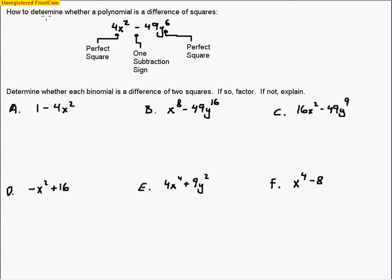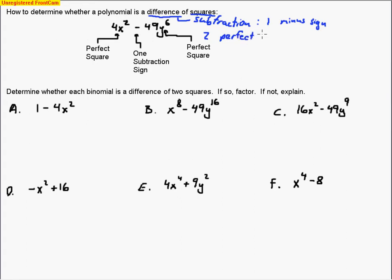We want to figure out how to determine whether a polynomial is a difference of two squares. When we see this, we're going to see a binomial — a binomial just means there are two terms. The word 'difference' means subtraction, so we're looking for a subtraction problem with only one minus sign. Then we need two perfect squares. Once we have one minus sign and two perfect squares, we know we've got a difference of two squares.